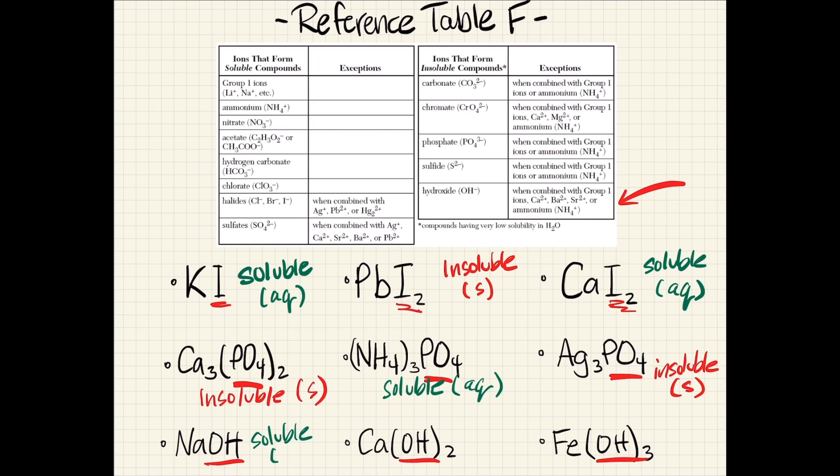That means sodium hydroxide will dissolve completely into water. Our second hydroxide compound is calcium hydroxide, and we can see in the exceptions rule that calcium ions, when attached to hydroxides, will form soluble compounds.